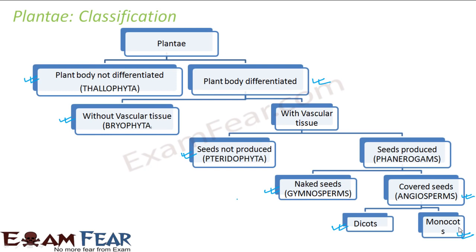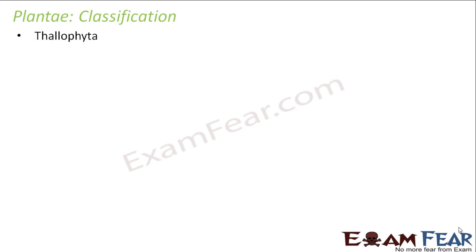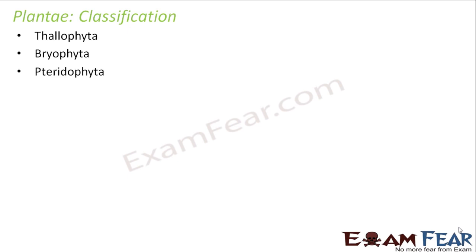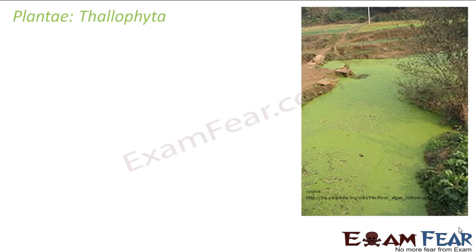In this lesson, we are going to talk about each of these types in detail, one by one. We will start with thallophyta. The different groups we will study are: thallophyta, bryophyta, pteridophyta, and phanerogams — wherein we will talk about gymnosperms and angiosperms.